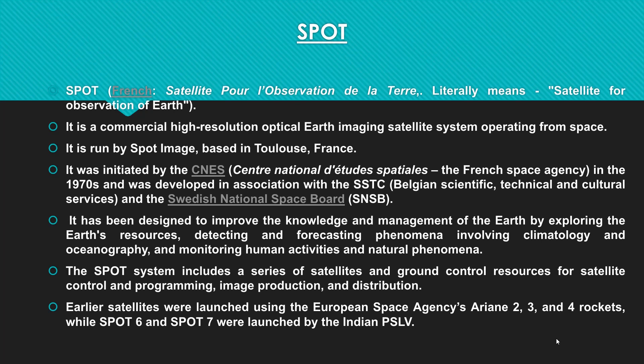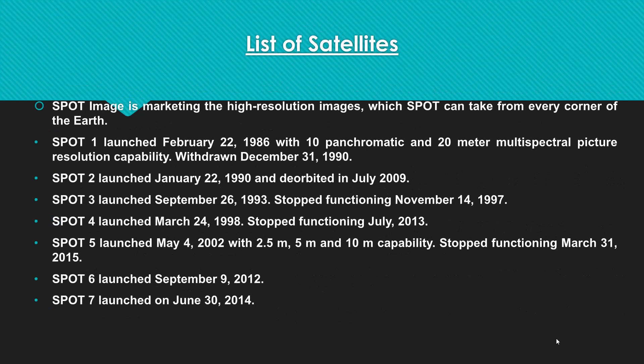Looking at the SPOT satellite series details: SPOT 1 was launched on February 22, 1986, with 10-meter panchromatic and 20-meter multispectral resolution, and was terminated on December 31, 1990. SPOT 2 was launched on January 22, 1990, and was de-orbited in July 2009. SPOT 3 was launched on September 26, 1993. SPOT 4 was launched on March 24, 1998, and stopped functioning in July 2013.